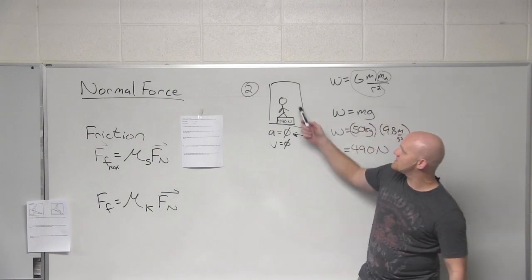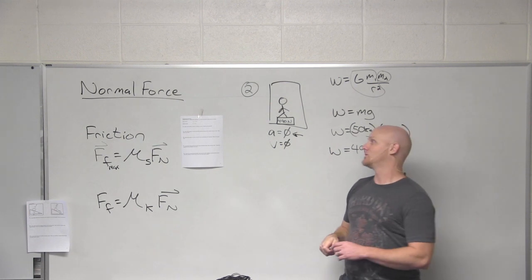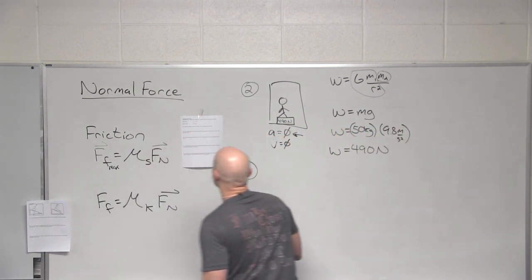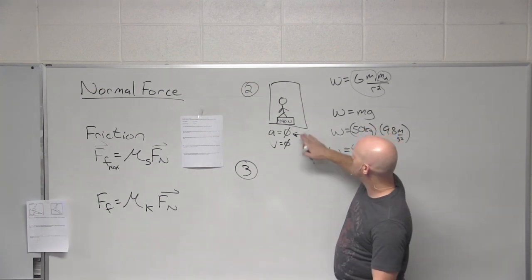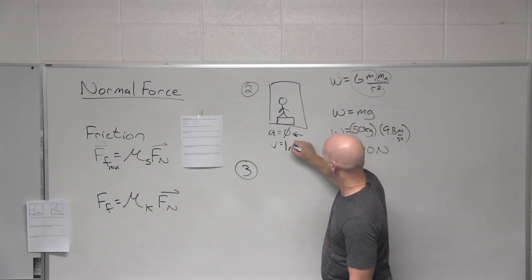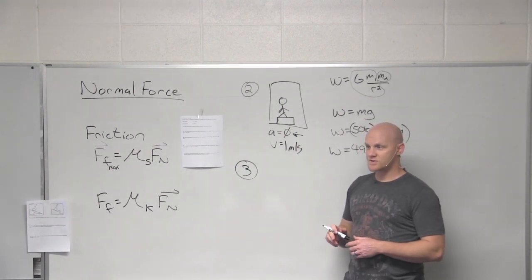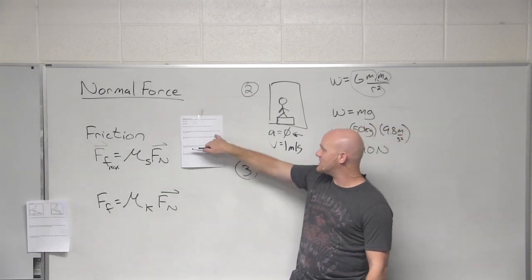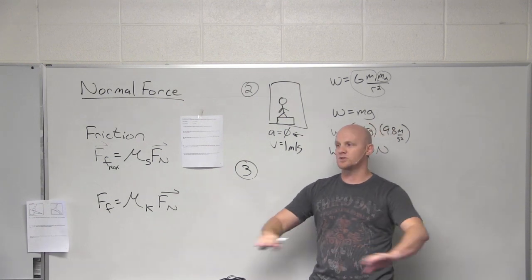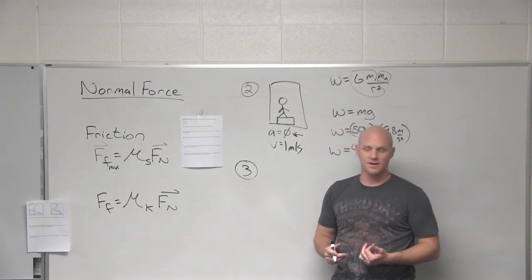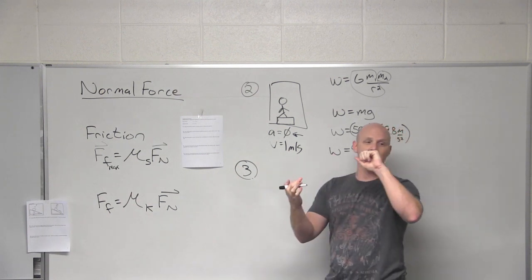If this elevator does not have an acceleration of zero, her weight and the normal force — what the scale reads — are not necessarily going to be equal. Problem three: a 50-kilogram woman stands on a scale in an elevator moving downward with a constant velocity of 1 meter per second. Our velocity is now 1 m/s, but there's still no acceleration. Constant velocity is a dead giveaway: acceleration is zero, net force is zero, and we're in dynamic equilibrium.